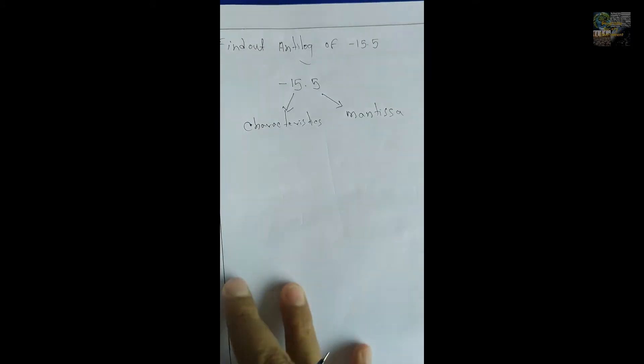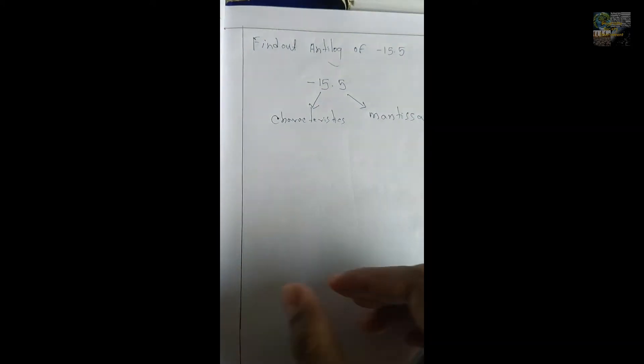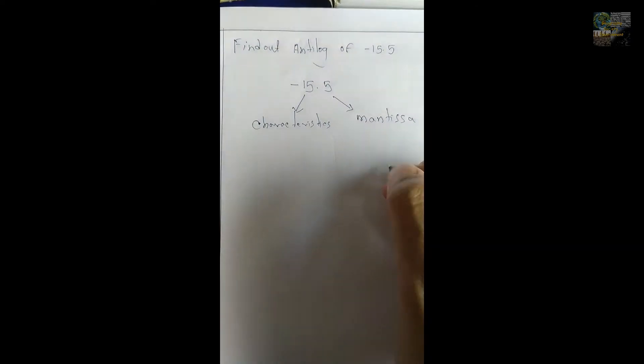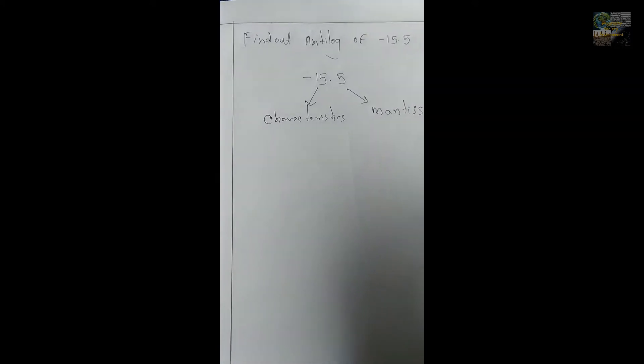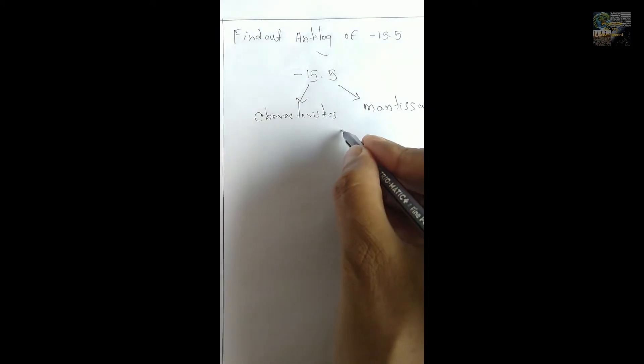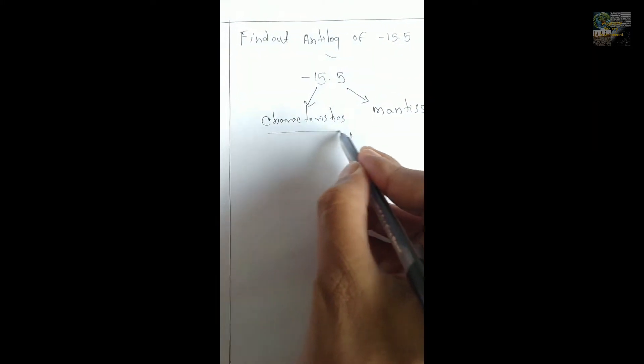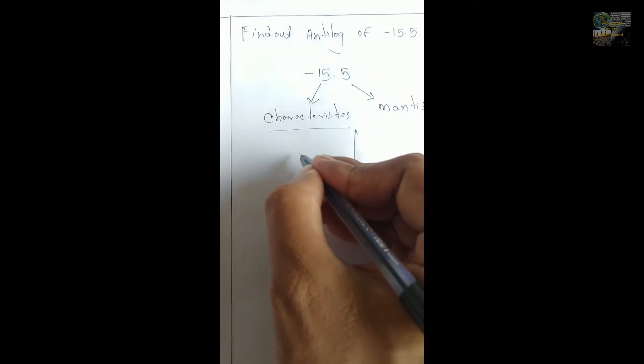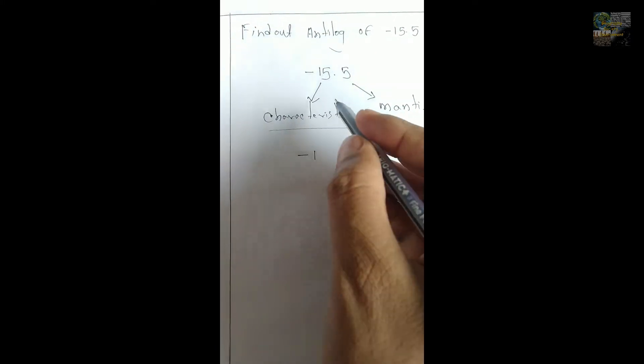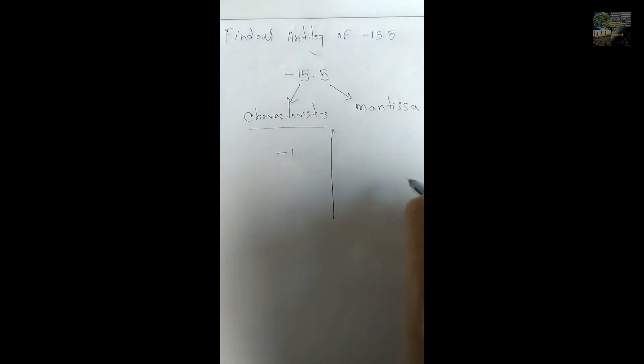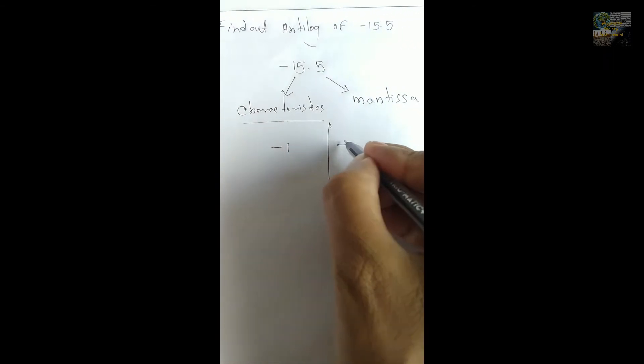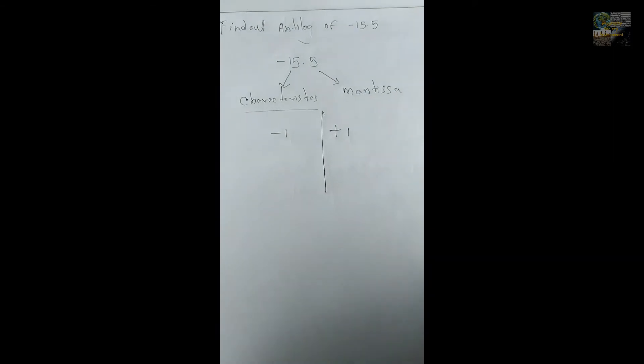To find out the antilog of any negative number, you can just add and subtract one from characteristics. In the left hand side, there is characteristics - you need to subtract one from the characteristics value. And in the right hand side, there is mantissa part where you need to add plus one with it.